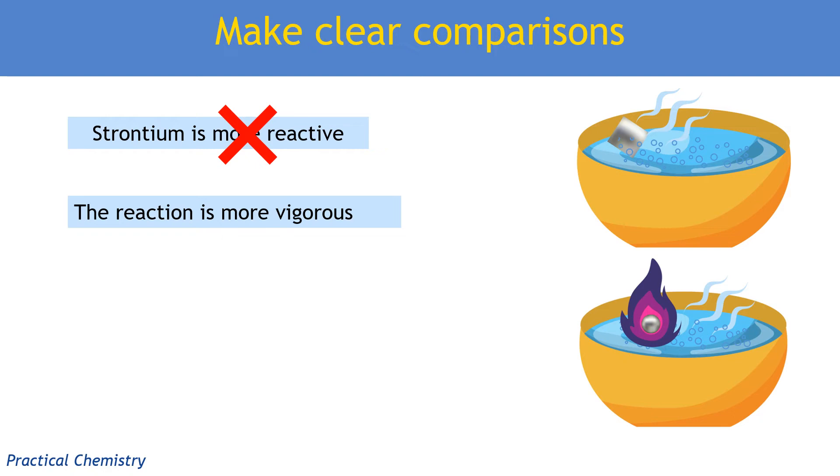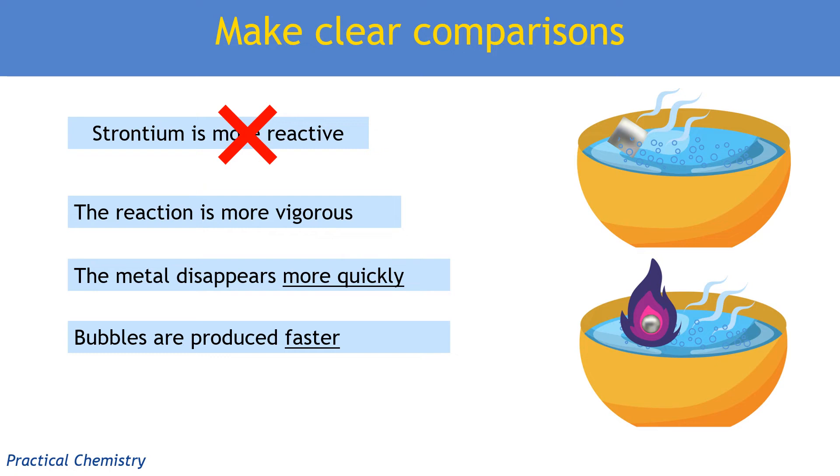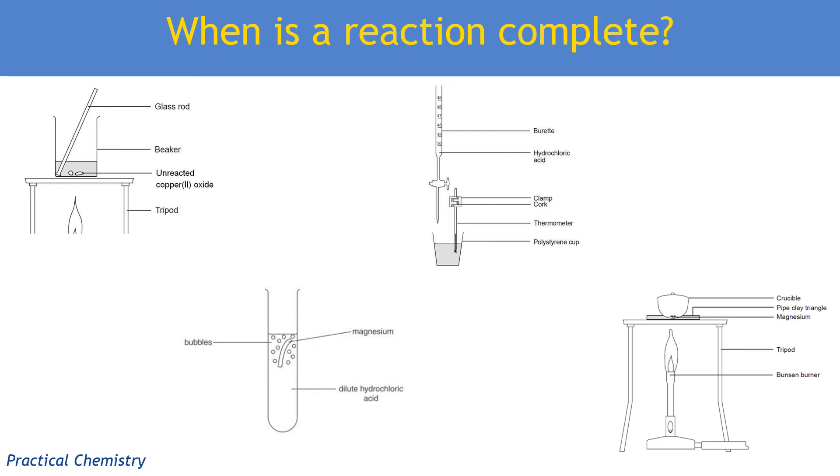So you could say the reaction is more vigorous. That's a good way of sort of saying generally that it happens faster, it gives off more heat, you know it's just generally more visibly reacting. You can, of course, refer to the disappearing of the metal and say that it happens more quickly. And you can refer to the production of hydrogen gas and say that the bubbles are produced faster. Just note on these last two that we have a time element. It's about rates, it's like disappearing more quickly, producing gas faster. Don't just say more gas is produced because more gas depends completely on how many moles of metal you put in and therefore how many moles of hydrogen you get. That is not related to reactivity or how fast it bubbles.